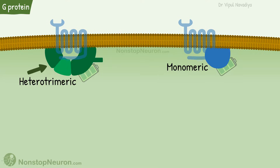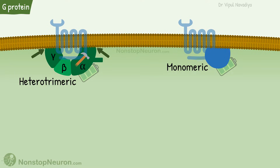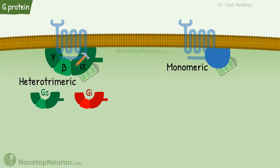The trimeric G-protein, as per the name, is composed of three subunits: alpha, beta, and gamma. Among them, alpha is the one that has GTPase activity. The entire complex is anchored to the membrane by the alpha and gamma subunits. The important G-proteins in this group are Gs, Gi, Go, and Gq.